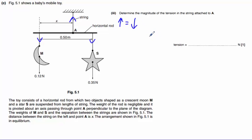Because the net force is 0, it's in equilibrium. Therefore, the tension, which we'll call T, is equal to 0.12 plus 0.35. So the tension is 0.47 newtons.